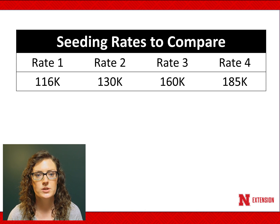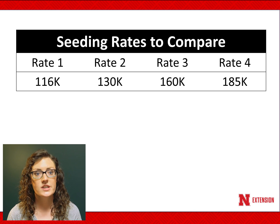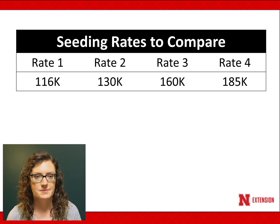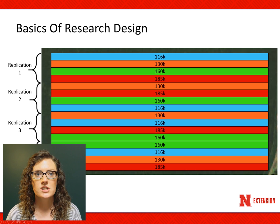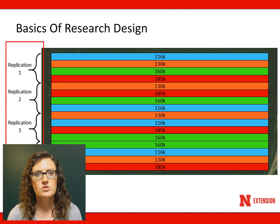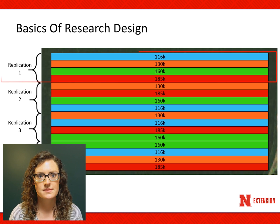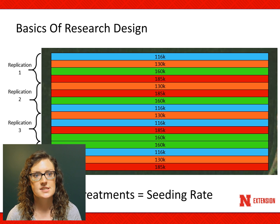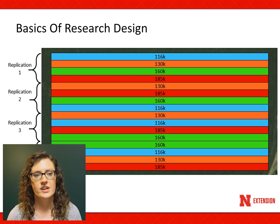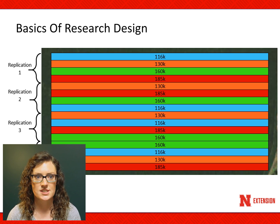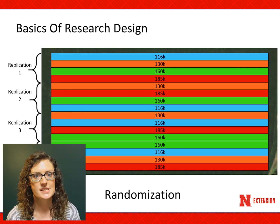When setting up this trial, it is important to minimize other variables. For example, the same soybean variety should be planted across the entire study area. Here we see the plot layout for the field. You will notice that there are four replications, and each replication contains all four treatments. In this case, the treatments are seeding rates.